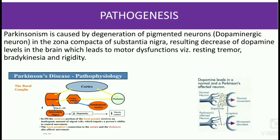Parkinsonism is caused by degeneration of pigmented neurons in the zona compacta of the substantia nigra, resulting in decreased dopamine levels in the brain, which leads to motor dysfunctions — namely resting tremor, bradykinesia, and rigidity. This is the pathophysiology of Parkinson's disease.